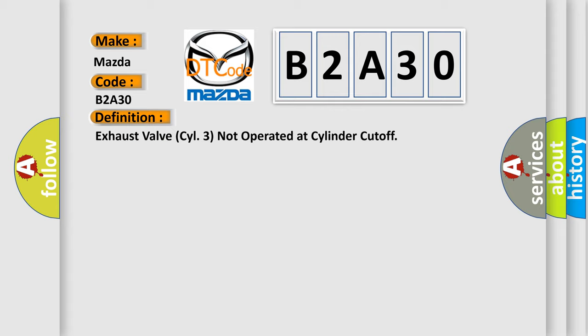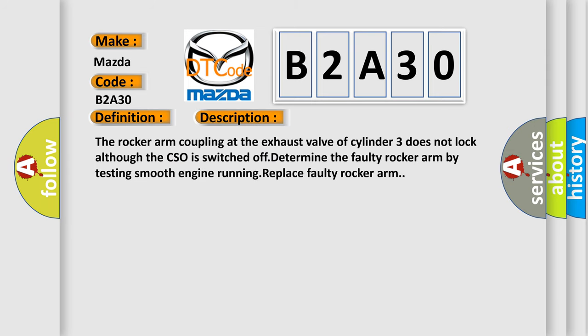And now this is a short description of this DTC code. The rocker arm coupling at the exhaust valve of cylinder 3 does not lock although the CSO is switched off. So you have to determine the faulty rocker arm by testing smooth engine running. Replace the faulty rocker arm.